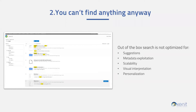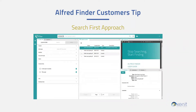Lastly, something else that we notice is that when you're using the standard interface, the search experience is not always optimized for end users. Often there is no ability for personalization or metadata exploitation, but Alfred Finder solves these issues by offering a search-first approach. With functionalities built in, Finder provides customers with a search-first experience, the ability to upload documents and edit metadata via the web interface, search-ahead typing with auto-completion, and extensibility through developer tools such as Digital Signature.